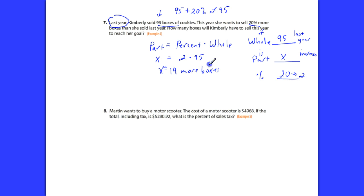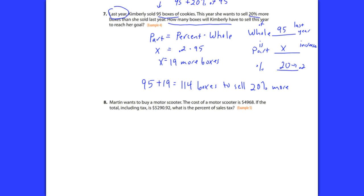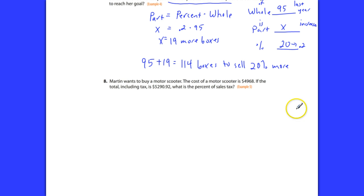If she sells 19 more boxes, the question says, how many boxes will she have to sell to reach her goal? 20%, because 19 is 20% of 95. What she needs to sell is 95 plus 19 for a total of 114 boxes to sell 20% more. So if she is going to increase 20% from last year, she'd have to sell a total of 114 boxes.